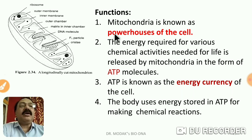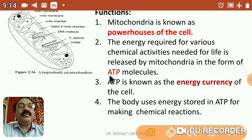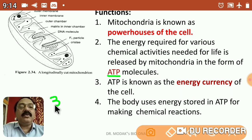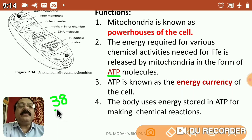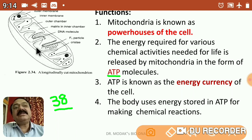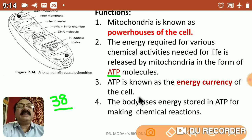Mitochondria is known as the powerhouse of the cell because in mitochondria most of the ATP is generated. From one glucose molecule, about 38 ATP molecules are produced during aerobic respiration. Out of these 38 ATP produced from one glucose molecule in a cell, 36 ATP are generated within the mitochondria.